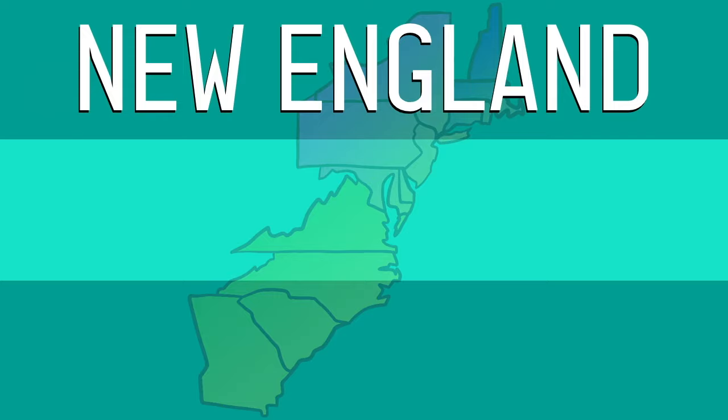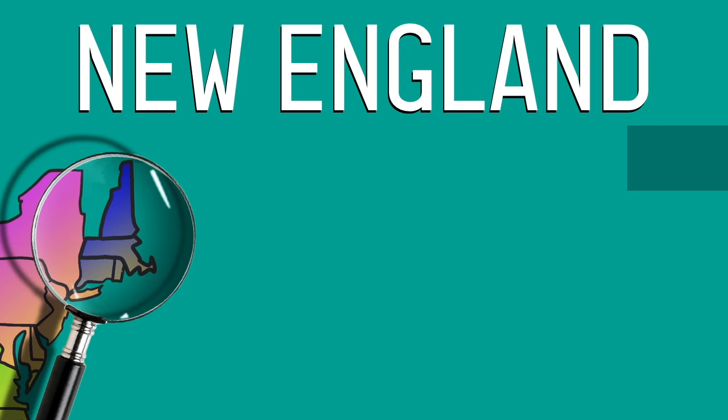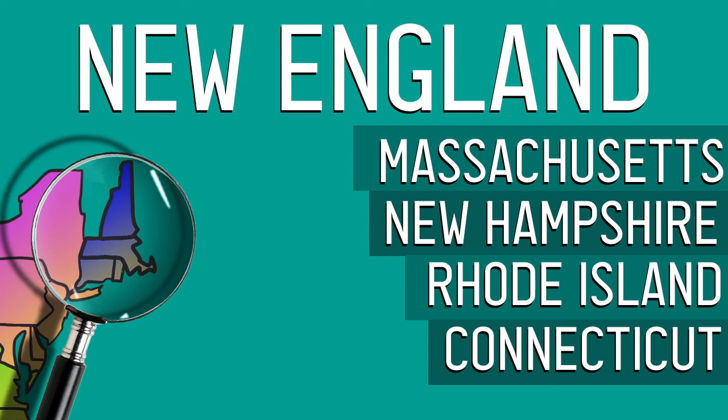We're going to start with New England first, because they're the ones that would probably protest the loudest for going last. There are four colonies that make up New England, and those are Massachusetts, New Hampshire, Rhode Island, and Connecticut. With the colony of Massachusetts being one of the first establishments of UK settlers — and of course I'm talking about the Pilgrims on the Mayflower.